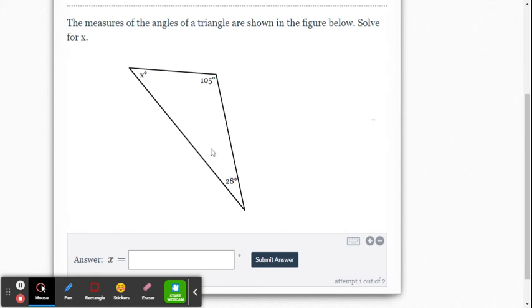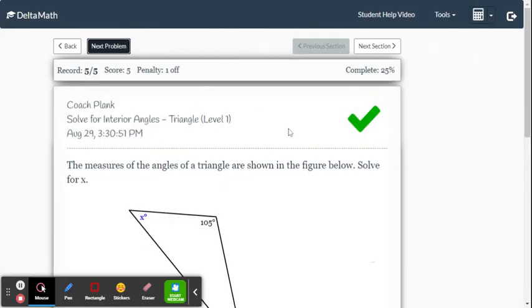And this one, one more. So 105 plus the 28, that's going to be 133. So we're going to go 180 minus the 133, which is 47. There you go.